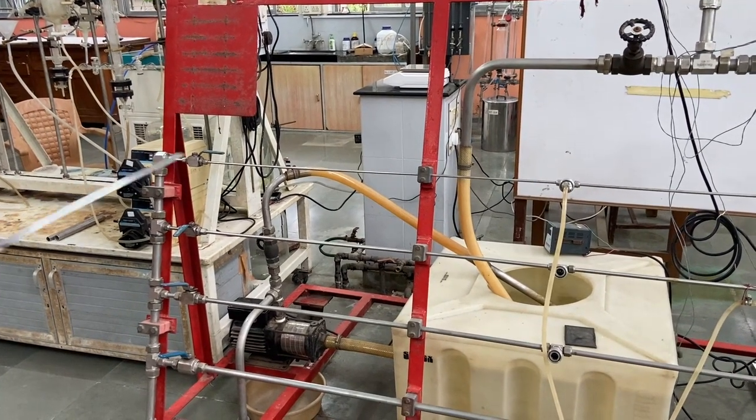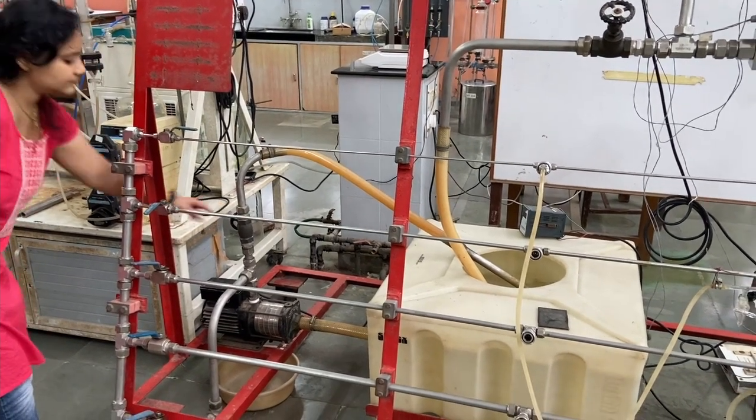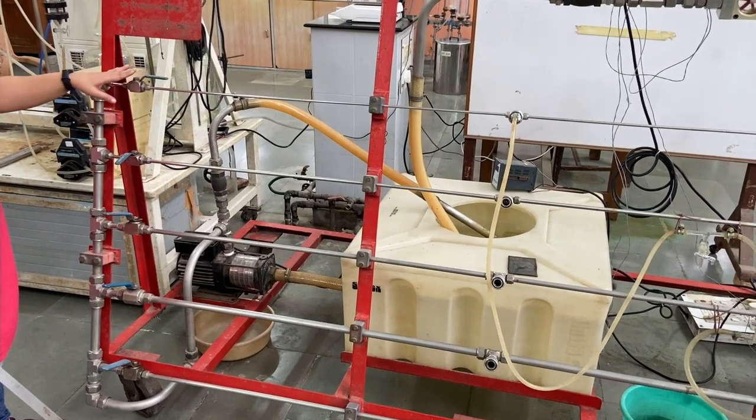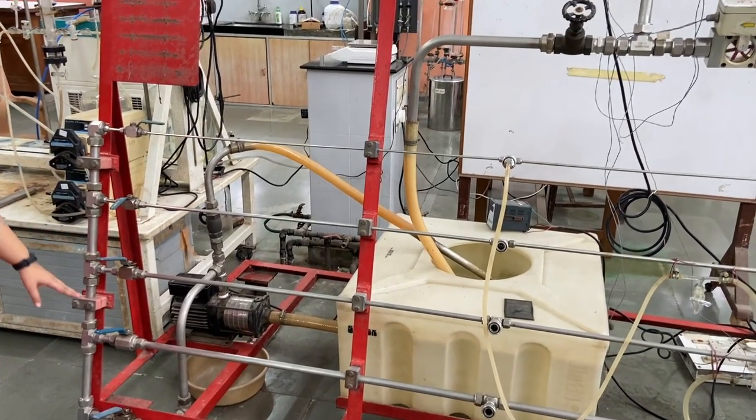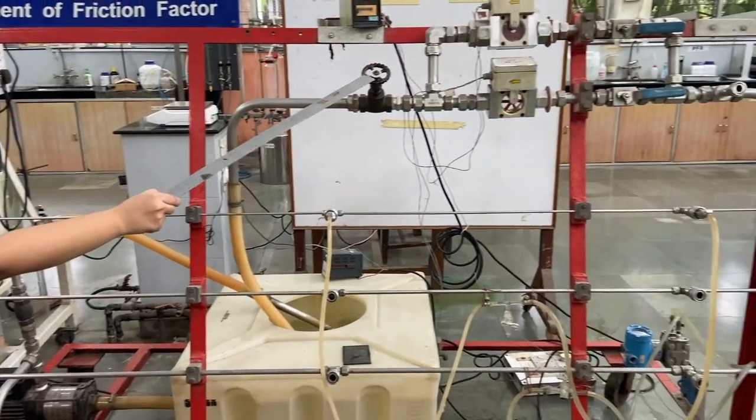The flow rate is controlled by various valves. First we have the bypass valve. Then there is this ball valve at the start of each pipe section. There is also a valve at the end of the sections.